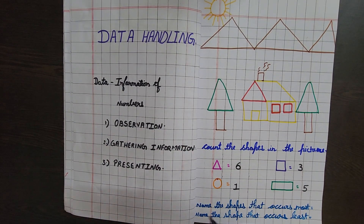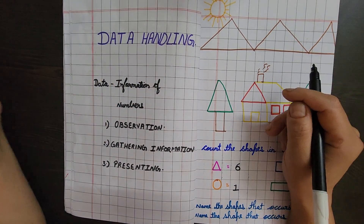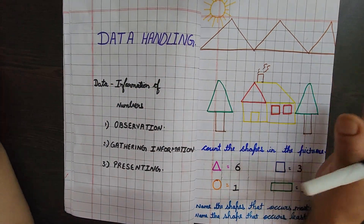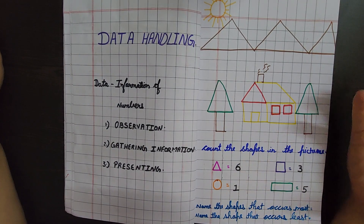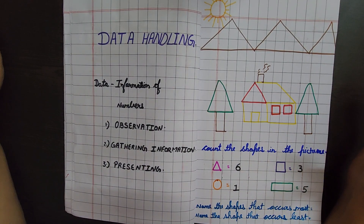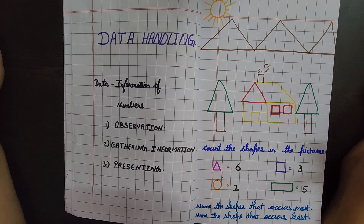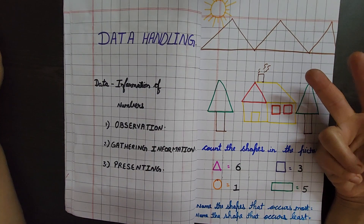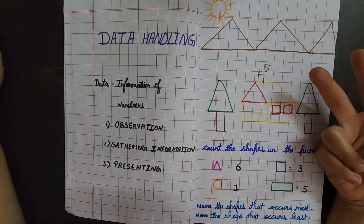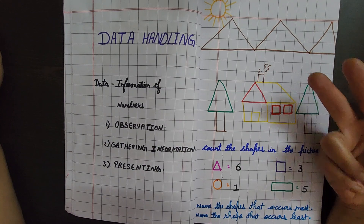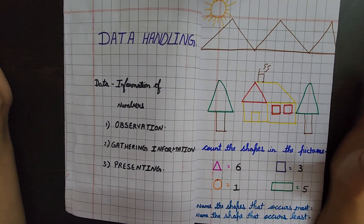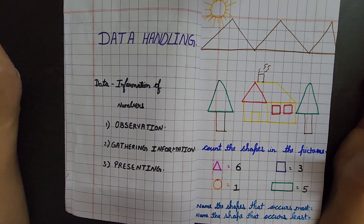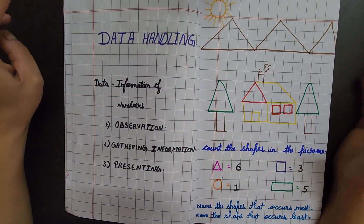For example, if I have apples and bananas with me, the information I am gathering is how many total number of fruits I have. I have two types of fruits: apples and bananas. How many of each — that is data handling.